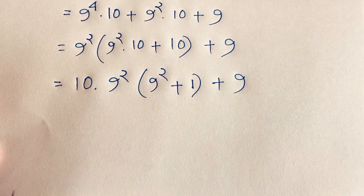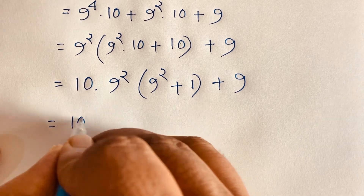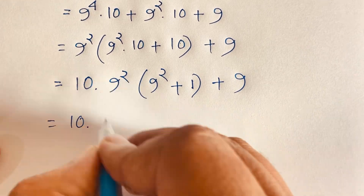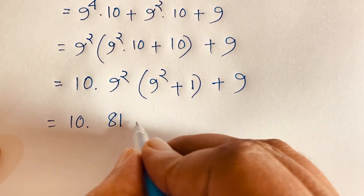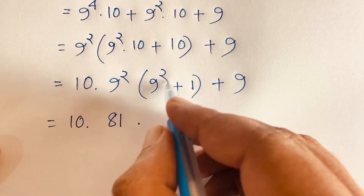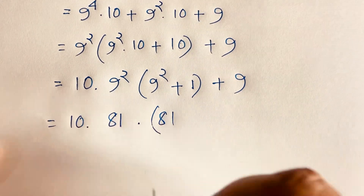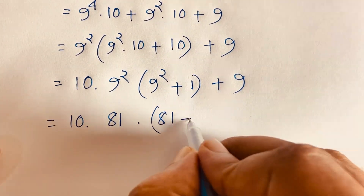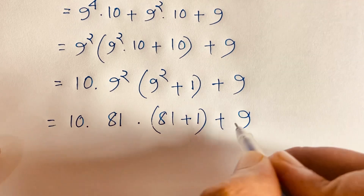Now in this expression, 9 to the power 2 equals 81. So it will be 10 times 81, and then plus 1, plus 9.